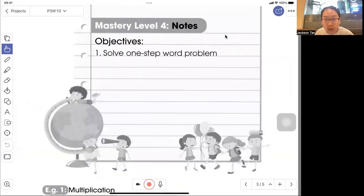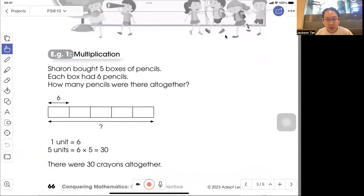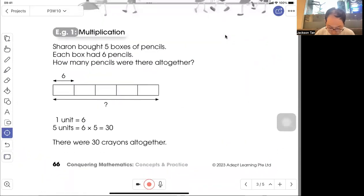Mastery level four, solve one step word problem. Multiplication. Sharon bought five boxes of pencils. Each box has six pencils. How many pencils were there altogether?